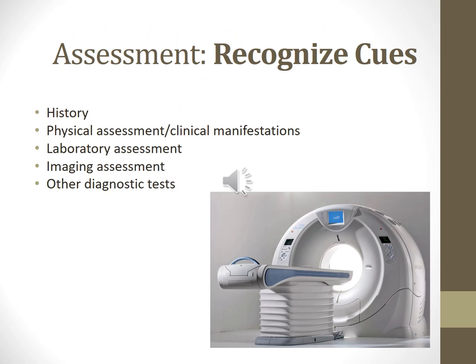Recognize cues — always take a thorough history. Ask the patient about recent surgeries or trauma, any transfusions, or other factors that might reduce renal blood flow. Obtain a complete drug history, including over-the-counter medications along with what is prescribed. Pay special attention to antibiotics, ACE inhibitors, or NSAIDs. For imaging studies, procedures requiring contrast dye injection should be noted. Ask if they have diabetes or long-term hypertension, because these can lead to acute kidney failure.